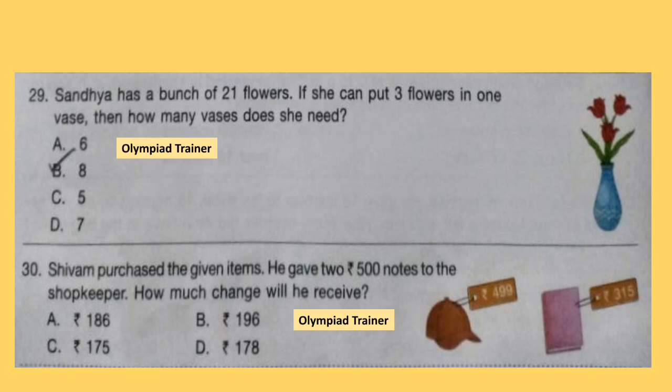Question 29. Sandhya has a bunch of 21 flowers. If she can put 3 flowers in 1 vase, how many vases does she need? There are 21 flowers with 3 flowers per vase, so 21 divided by 3 gives 7 vases. So option D is the answer.